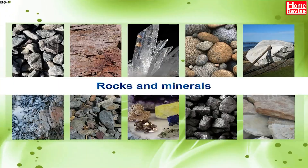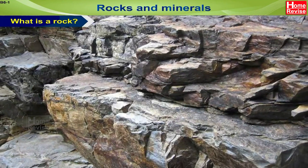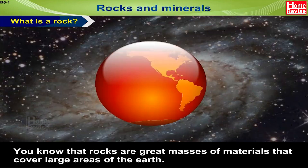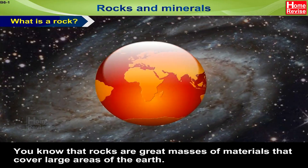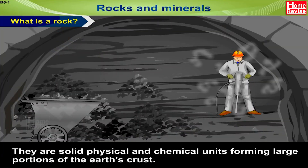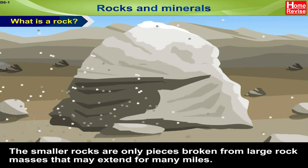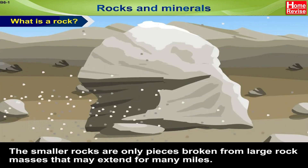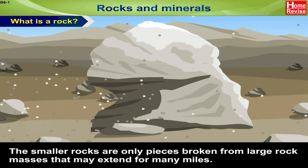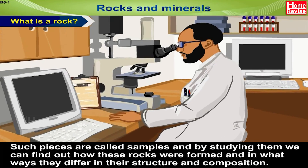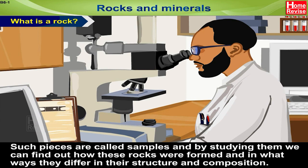Rocks and minerals. What is a rock? Rocks are great masses of materials that cover large areas of the earth. They are solid physical and chemical units forming large portions of the earth's crust. The smaller rocks are only pieces broken from larger rock masses that may extend for many miles. Such pieces are called samples, and by studying them we can find out how these rocks were formed and in what ways they differ in their structure and composition.